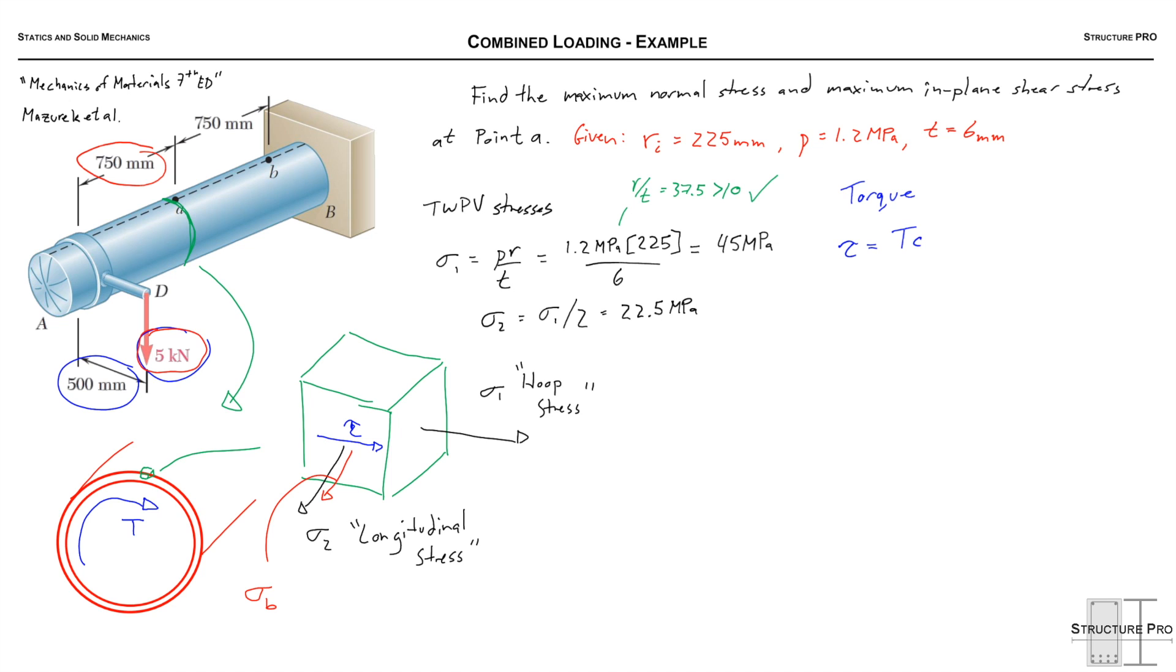Next let's deal with this torque which gives this shear stress tau, which is equal to Tc over J. So the C that we're solving for is the distance from the center of the section to the outside fiber or the point at A. So that's 225 plus the wall thickness of 6. So Tc over J ends up being 5000 times 500, that's our T, times 231, our C, and then divided by J. And J we just have to solve for the section.